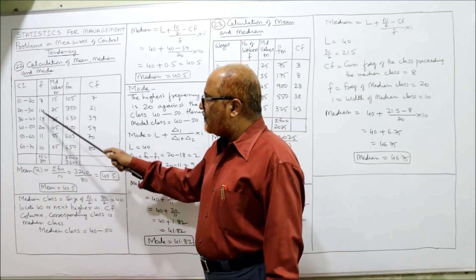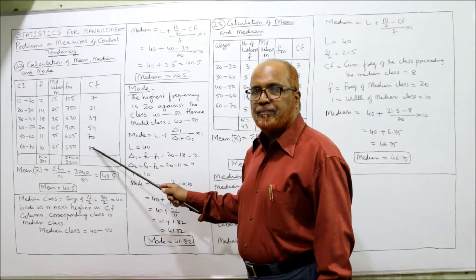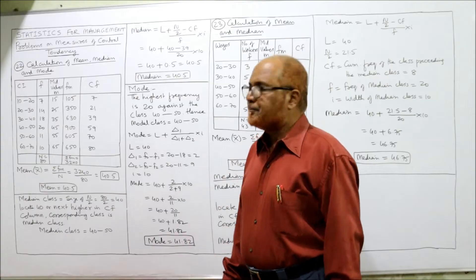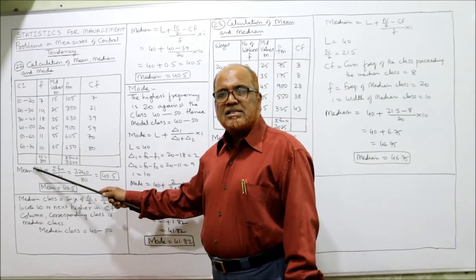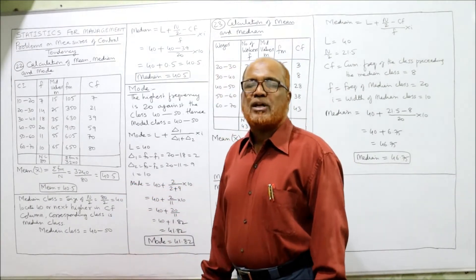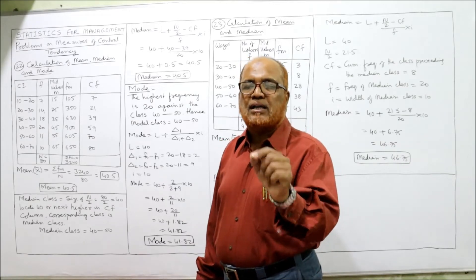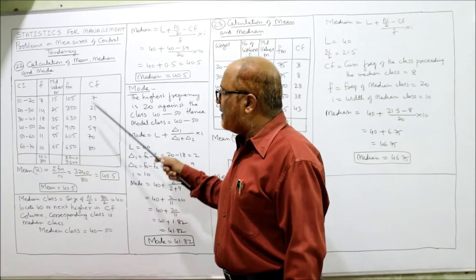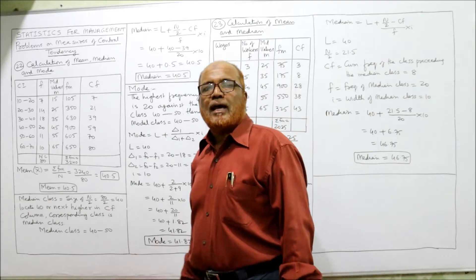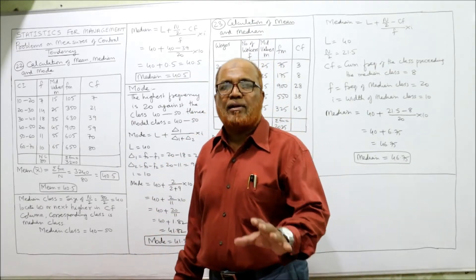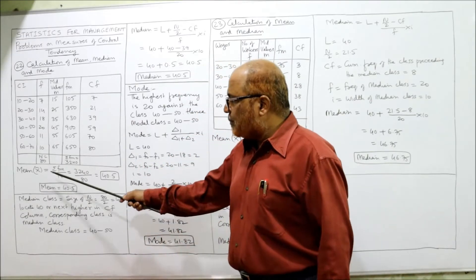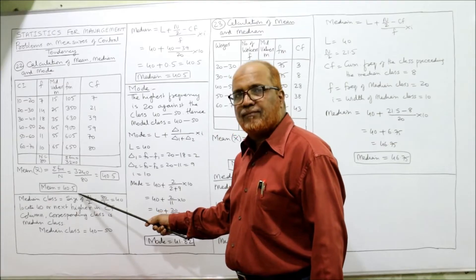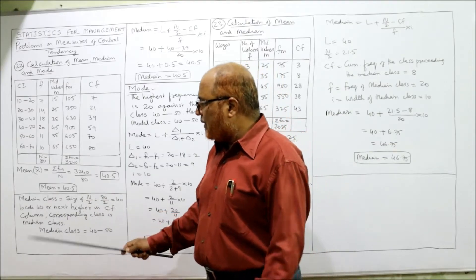The total of frequency must equal the last cf value — that confirms our calculations are correct. Now we substitute into the formula. Mean x̄ = summation fm ÷ n. For continuous series: 3240 ÷ 80 = 40.5. The fm column was required for mean, and the cf column is required for the median.